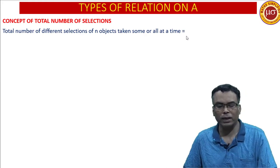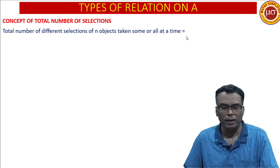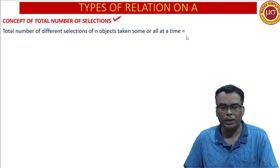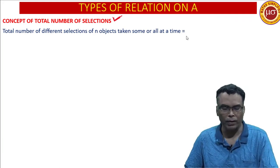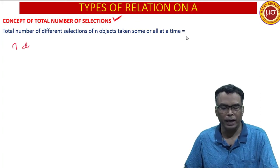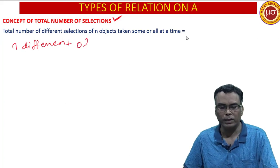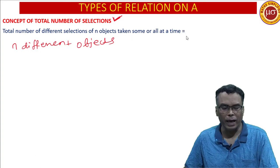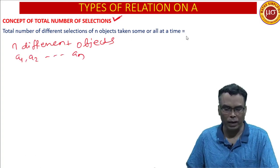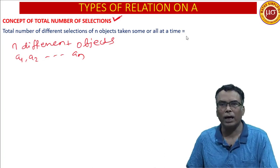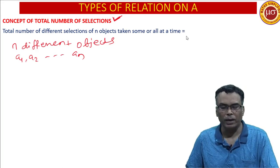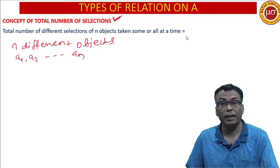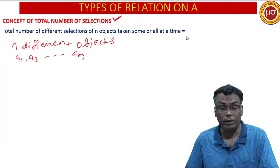Before discussing the number of reflexive, symmetric and other types of relations, let us recall the concept of total number of selections. Now, let there be N different objects — say the objects are a1, a2, ..., an. In how many ways, or how many selections or groups, can we get by taking some or all objects at a time? That we will discuss today.